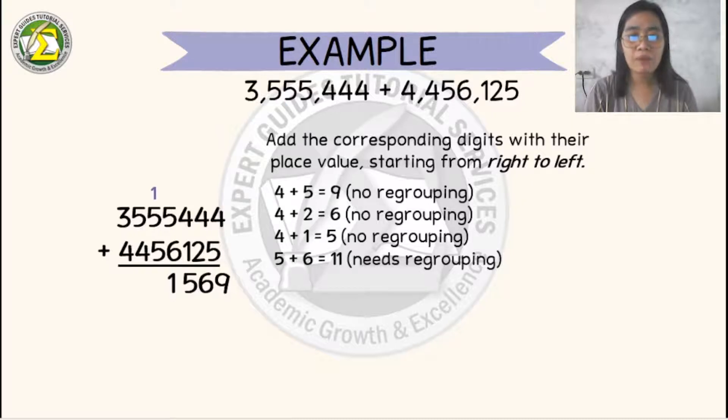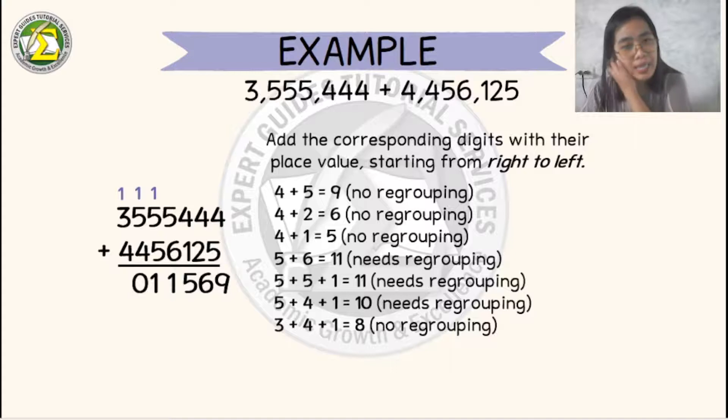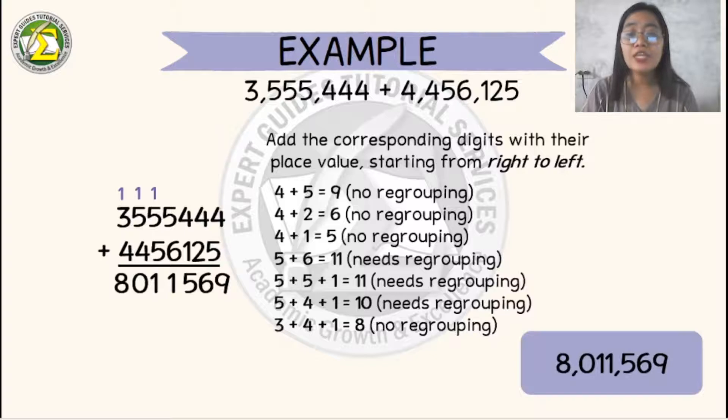5 plus 5 will become 10. Plus 1, 11. Again, you need to regroup. So 5 plus 4 will be 9. Plus 1 equals 10. So 3 plus 4 will become 7. Plus 1, 8. So therefore, the total number of these 2 addends will become 8,011,569.